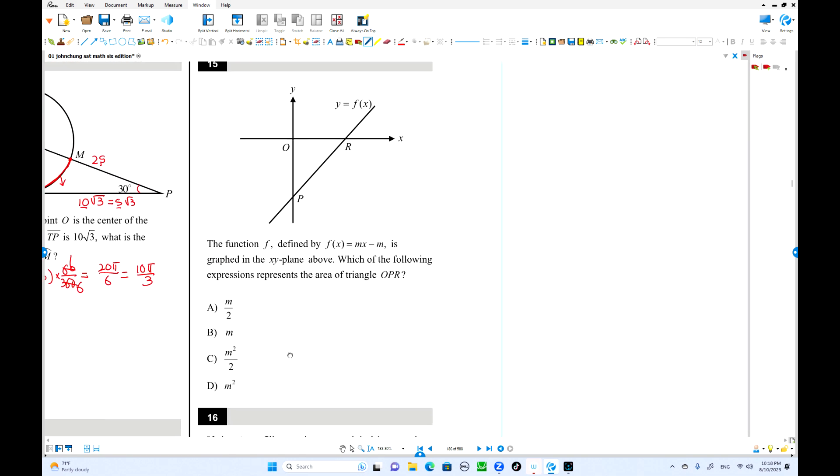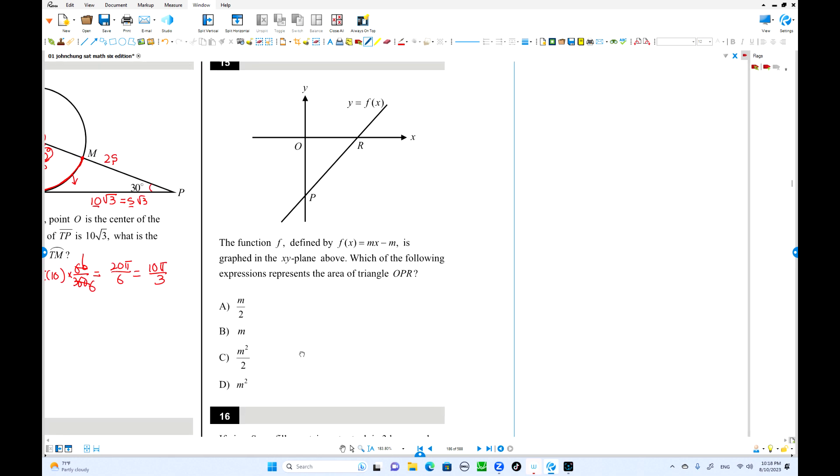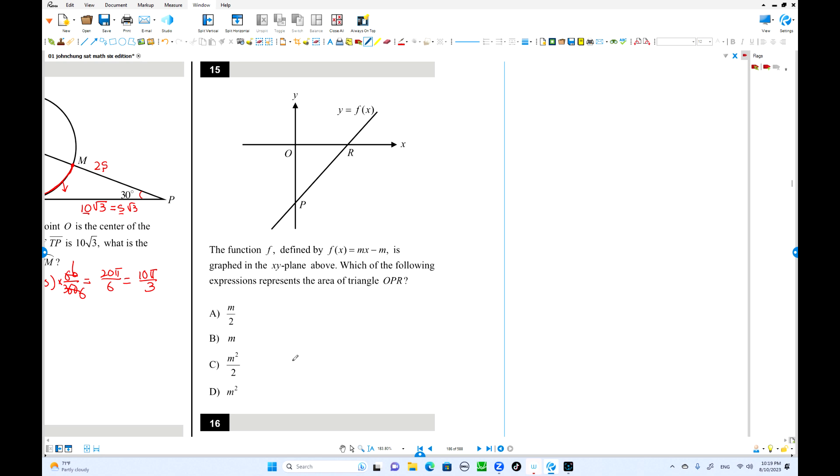Number 15. Function f defined f of x equals mx minus m is graphed on the xy plane. Which of the following expressions represents the area of triangle OPR? The area of this triangle. We need to find these two lengths here and here. This one is x-intercept of the equation. When y equals 0, mx minus m, mx equals m. X is 1 when you divide by m there. So this one is 1. Distance is still 1, this is positive.